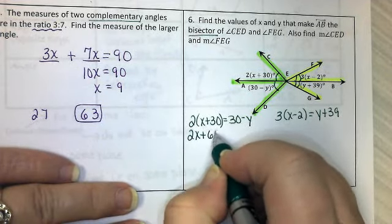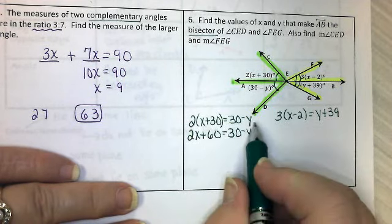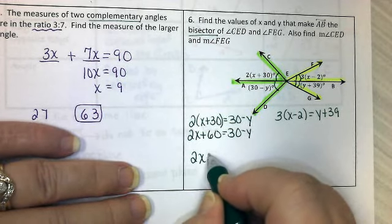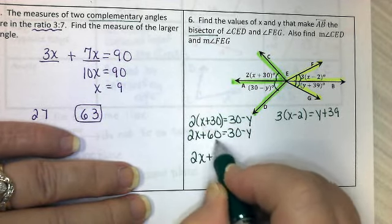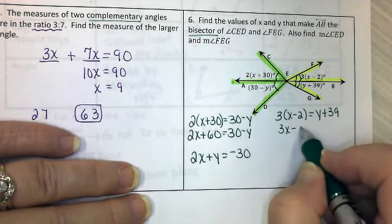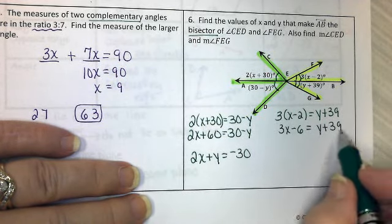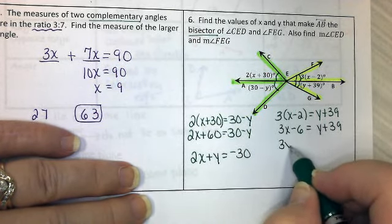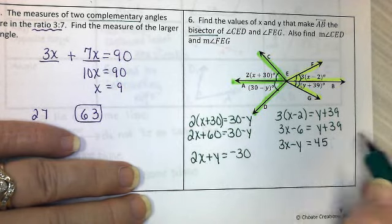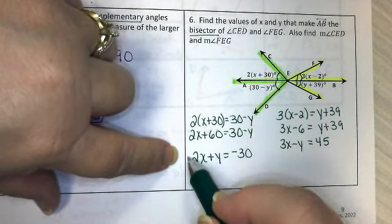So this one is 2x plus 60 equals 30 minus y. And if I move everything over to get it into a good format, I'm going to add y to both sides, I'll subtract the 60. Over here I get 3x minus 6 equals y plus 39. I will subtract the y from both sides, add the 6. And there I have my two equations that I'm going to put into a system.